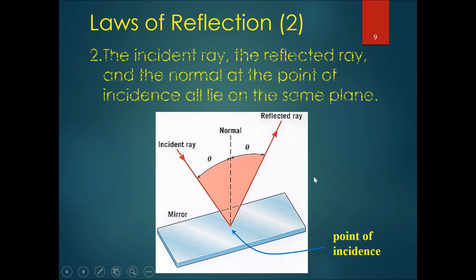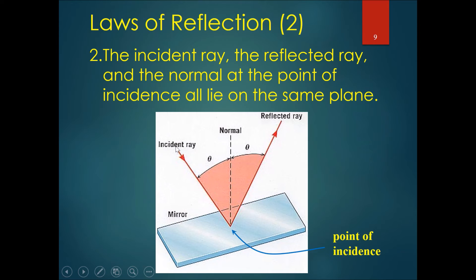The second law of reflection states that the incident ray, reflected ray, and normal at the point of incidence all lie on the same plane. What this means is that these three lines — the normal, the reflected ray, and the incident ray — could all be drawn on a single flat plank of wood placed over them.